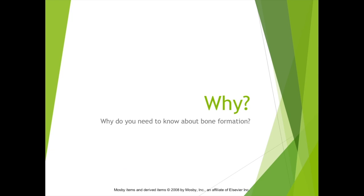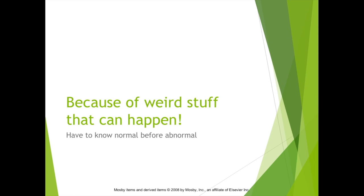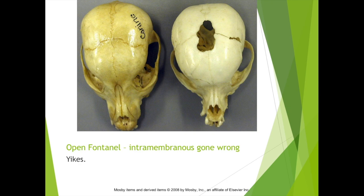So why do you need to know all this? You have to know the normal before the abnormal, because weird stuff can happen. An example is an open fontanelle — intramembranous ossification gone wrong, or at least incomplete. This can happen in humans as well, and it's very common in chihuahuas. It's good to know if they have a fully formed frontal bone or an open fontanelle. With an open fontanelle, you can see the hole in the top of the skull — typically between the frontal and parietal bones. The membrane formed over the brain as it should, but the intramembranous ossification stopped short, so it's just closed with a thick connective tissue membrane.